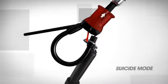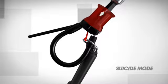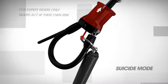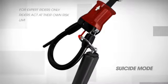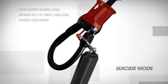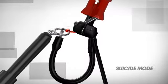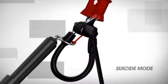If you choose to ride your new Ironheart 4 in suicide mode, it has limited depower, which is why it is recommended for expert riders only. To assemble in suicide mode, you will need to thread the chicken loop through the large metal ring and close the system.